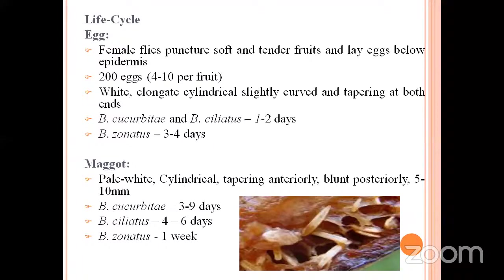Coming to the maggots: after 1 or 2 days, the maggots emerge from the egg. These maggots are pale, dirty white in color, cylindrical and tapering anteriorly, blunt posteriorly. These maggots are apodous and acephalous. For the cucurbitae species, the larval period is 3 to 9 days; for celiatus, 4 to 6 days; for zonatus, 1 week.